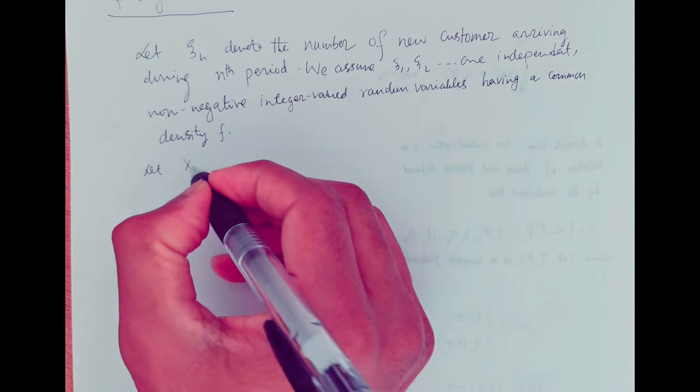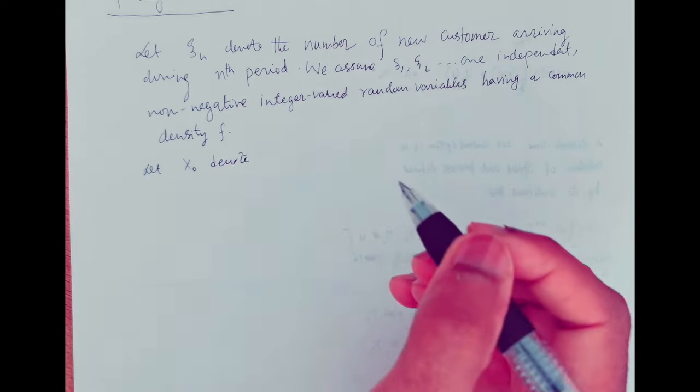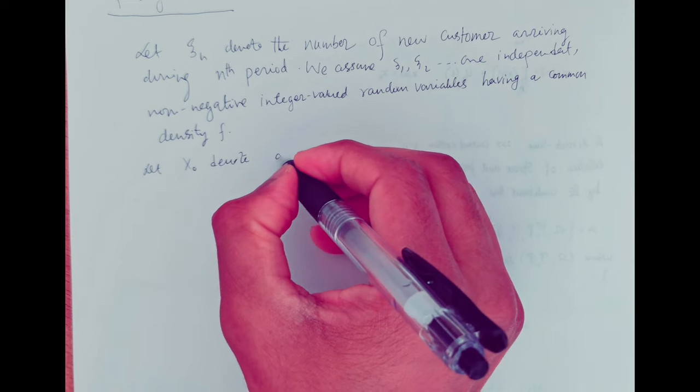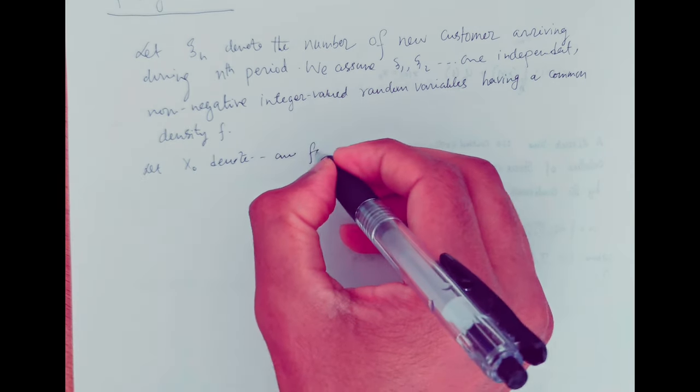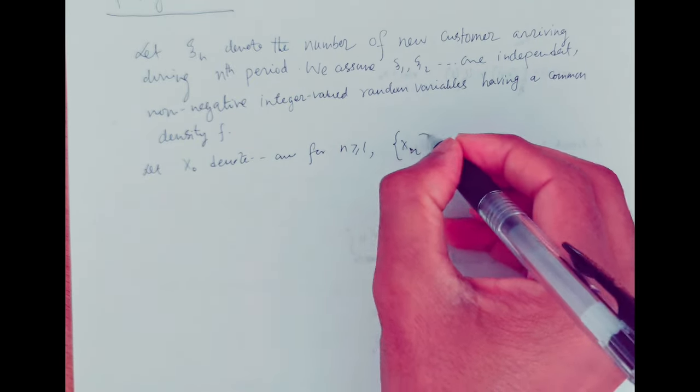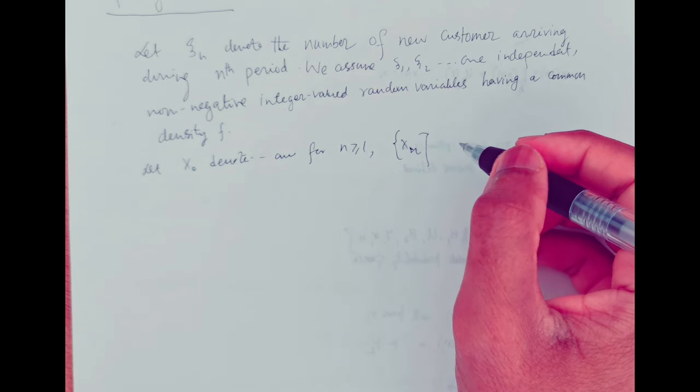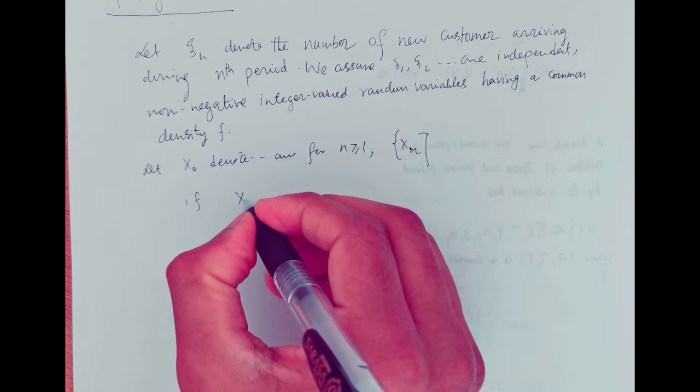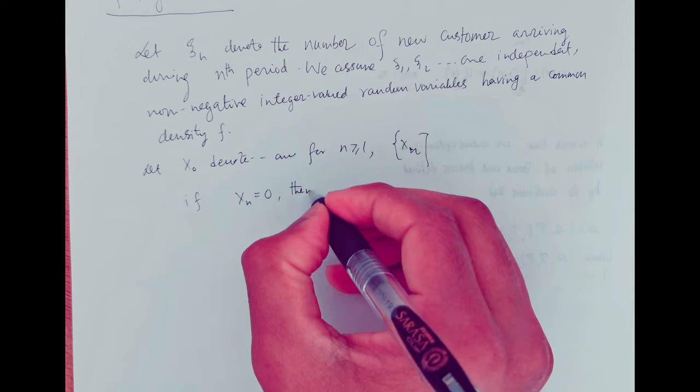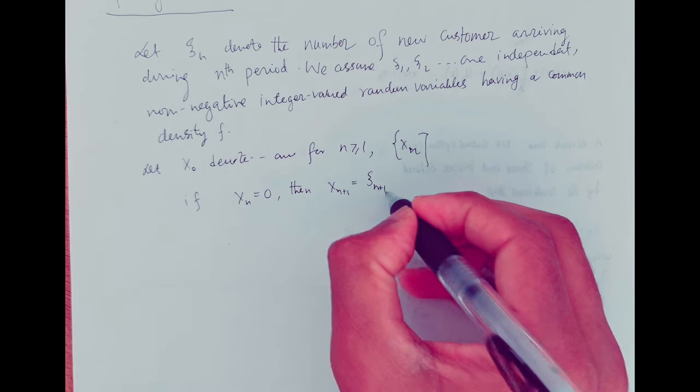Let x0 denote the number of customers present initially. And for n greater than or equal to 1, let xn denote the number of customers present at the end of the nth period. Now if xn equals 0, then xn plus 1 is simply xi_n plus 1.